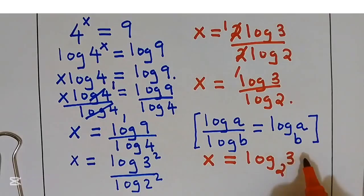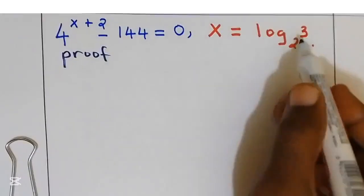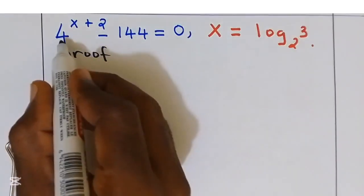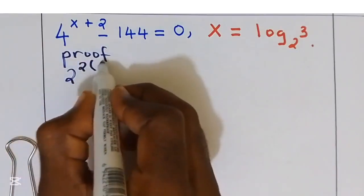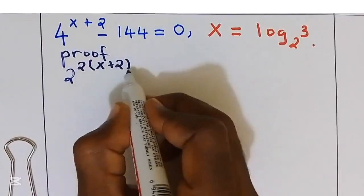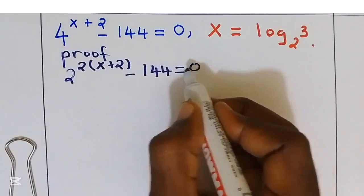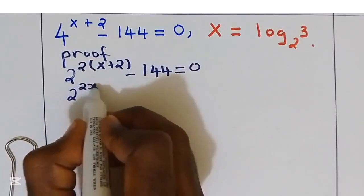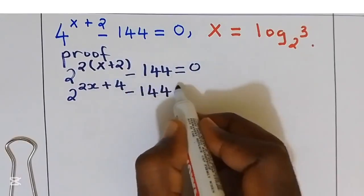Now we are going to verify our answer by substituting x equal to log base 2 of 3 back into the equation. We know 4 is 2 to the power of 2, so we have 2 squared to the power of x plus 2, minus 144, equal to 0. Substituting gives 2 to the power of 2x plus 4, minus 144, equal to 0.